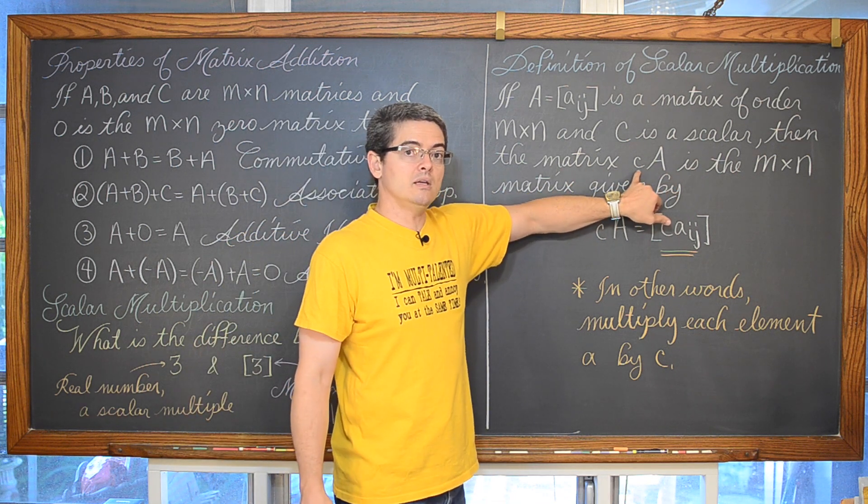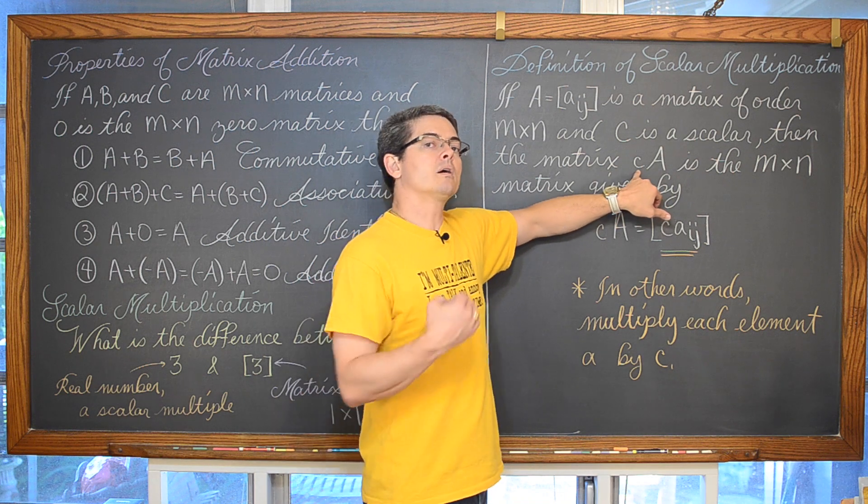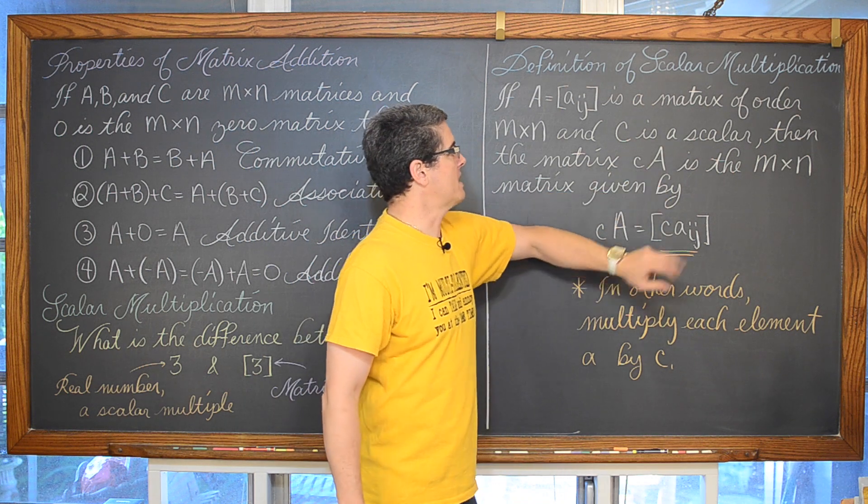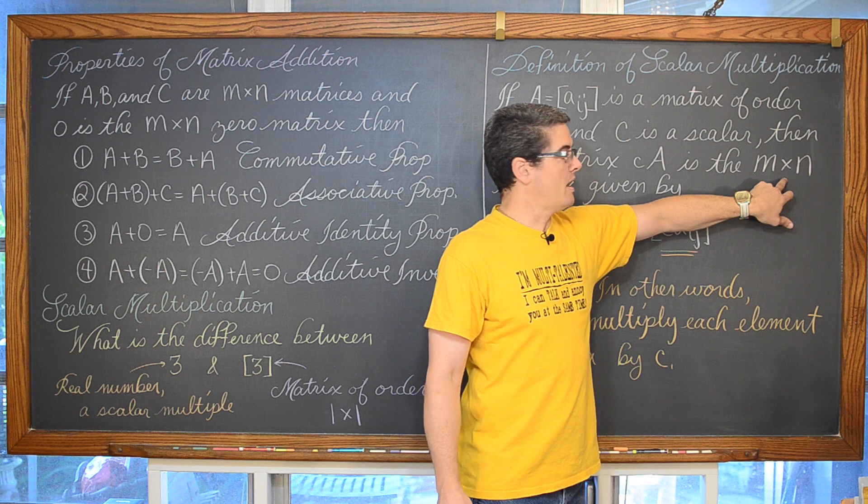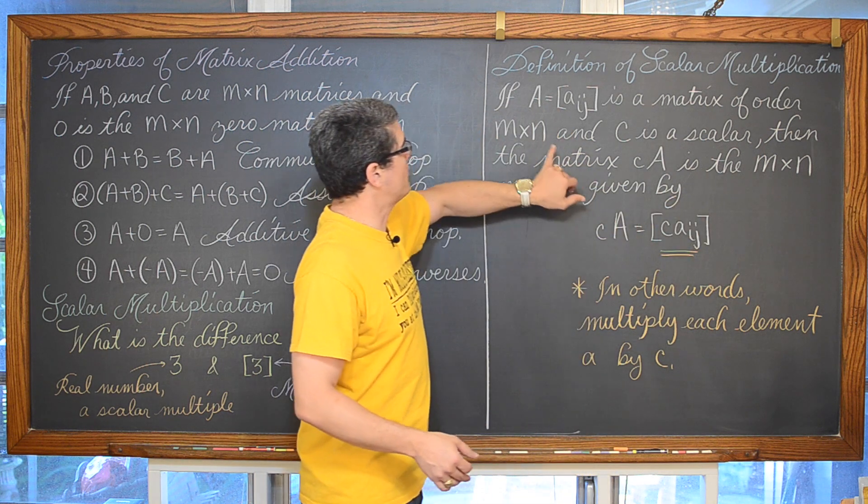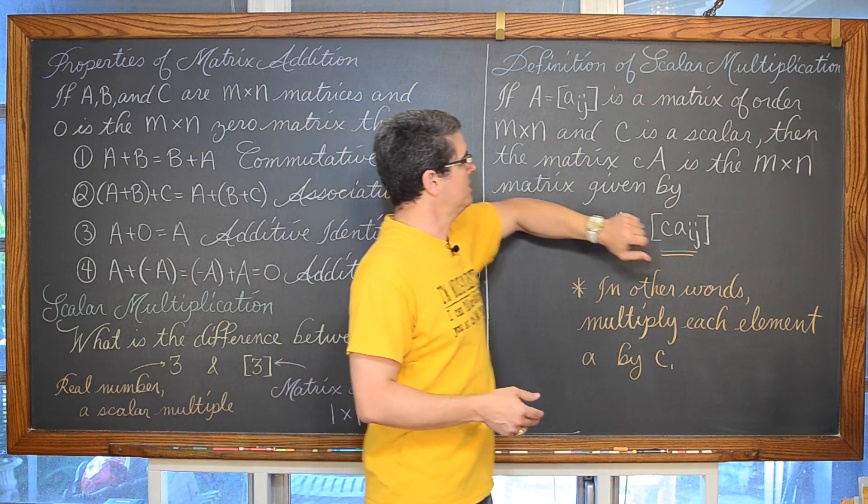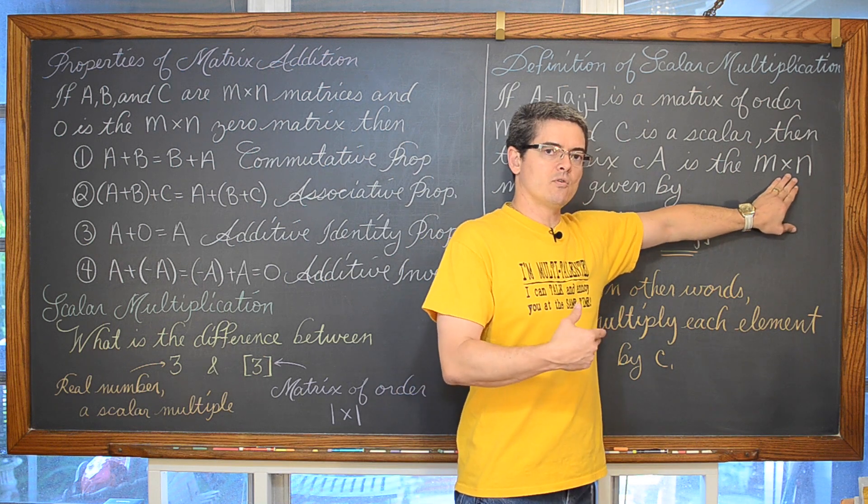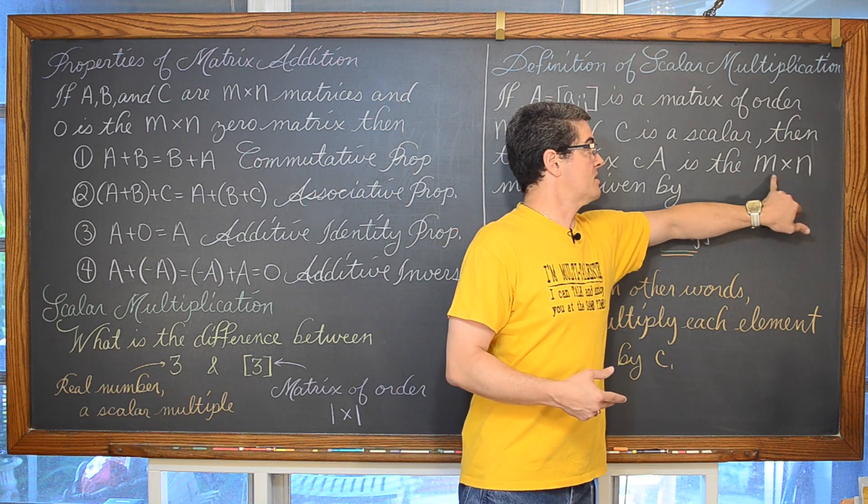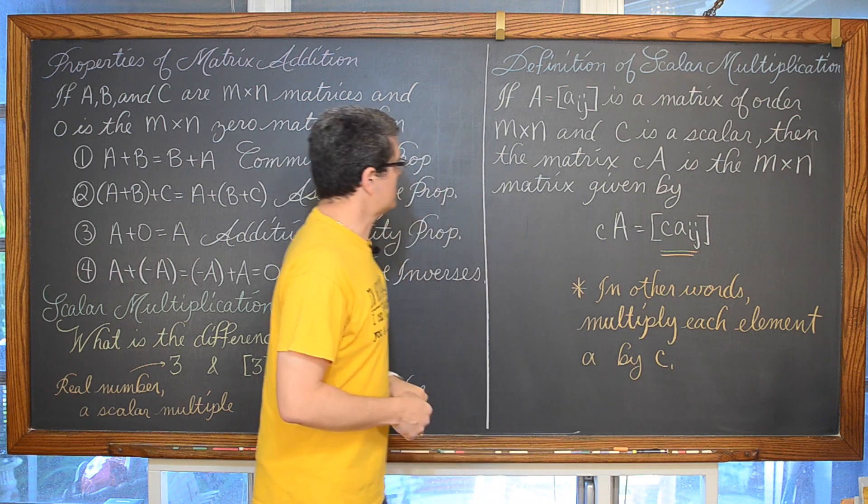Then the matrix CA. Notice this is a lowercase c, indicating that we are talking about a scalar multiple of matrix A, is another matrix m by n. We are starting off with a matrix of order m by n, and we are getting another matrix of order m by n. So the number of rows and the number of columns are not going to change.